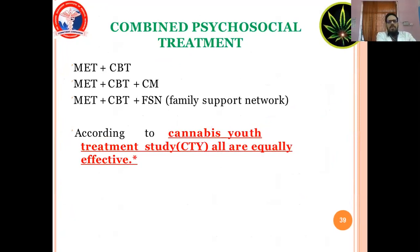Combined psychosocial treatment includes: MET plus CBT; MET plus CBT plus CM; and MET plus CBT plus family support network. According to the Cannabis Youth Treatment Study, all combined approaches are equally effective.